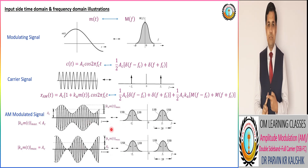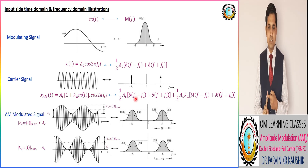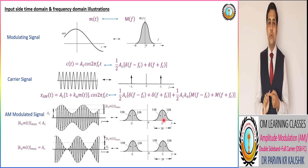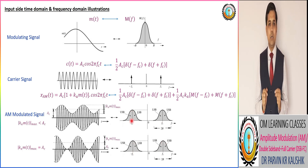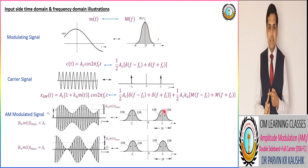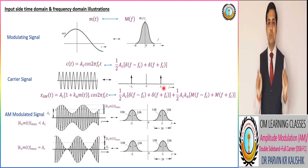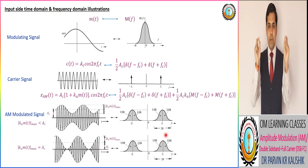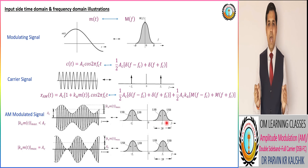From observation of the time domain and frequency domain representations, the DSB-FC signal contains the sum and difference of the carrier and modulating signal frequencies. Importantly, the carrier frequency is present in the modulated spectrum, shown as a dark line at ±fc. The modulated spectrum contains both the upper sideband and lower sideband, meaning the modulating signal appears twice. Due to the presence of both sideband and carrier, this technique is called Double Sideband Full Carrier.